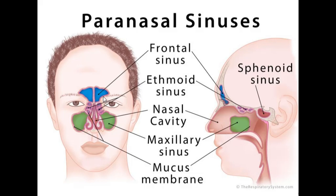The frontal sinus opens into the middle meatus. In the nasal cavity you have your superior meatus, middle meatus, and inferior meatus. The middle one is where the frontal sinus drains. You can see it here in the lateral view — the frontal sinus drains down into the middle meatus.